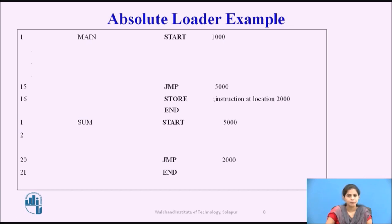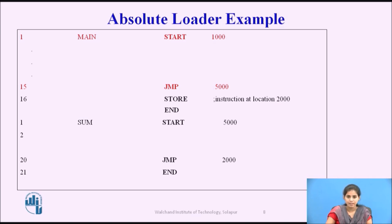Now we see the Absolute Loader example. In this example there are two independent segments. At line number 1, the assembler directive START specifies the physical starting address used during execution of the first segment, main. At line number 15, the jump instruction specifies the physical starting address used by the second segment. The assembler creates object codes for these two segments considering their starting addresses. During execution, the first segment is loaded at address 1,000 and the second at address 5,000 as specified by the programmer. Thus, the problem of linking is manually solved by the programmer by taking care of the mutually dependent addresses.